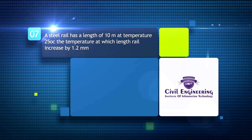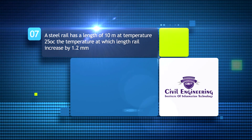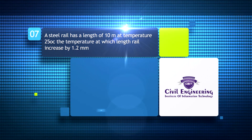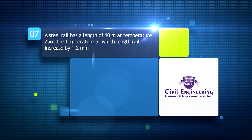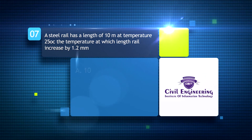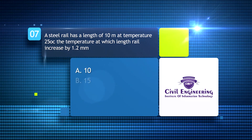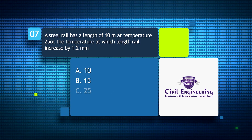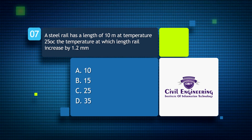A steel rail has a length of 10 meters at a temperature of 25 degrees Celsius. The temperature at which the length of the rail increases by 1.2 millimeters: A) 10°C, B) 15°C, C) 25°C, D) 35°C.